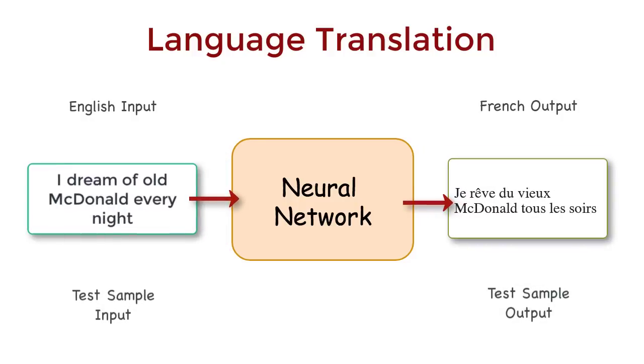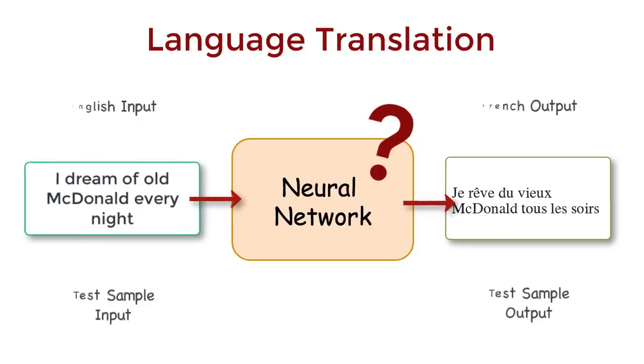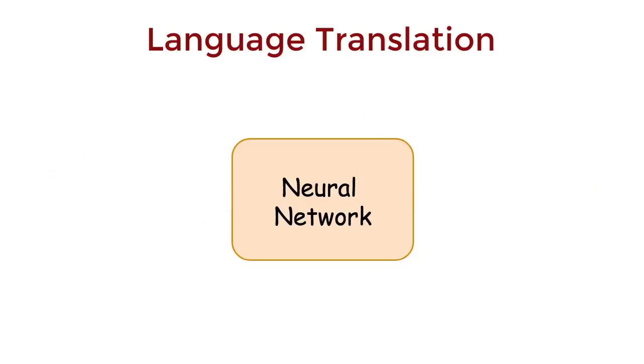Now, this sounds interesting. But what exactly is this network? Now, we can actually derive the neural network architecture required based on the problem we are trying to solve. In this case, we need a neural network that solves the problem of language translation.